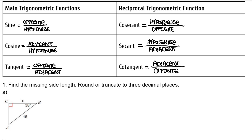Find the missing side length. Round or truncate your answer to three decimal places. I notice they've given me the measure of angle B, so I will use that as my focus angle and label the sides accordingly. Side CA would be the opposite side because it's opposite angle B. Side CB would be the adjacent side because it's between angle B, our focus angle, and the right angle. And side AB is the hypotenuse because it's across from the right angle.